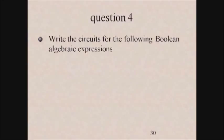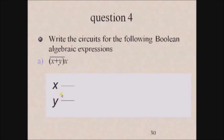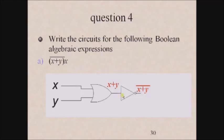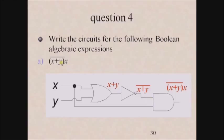For the expression (x plus y) whole complement · x: take input variables x and y. First, use an OR gate to get x plus y. Then give x plus y as input to a NOT gate to get x plus y whole complement. Finally, give x plus y whole complement and x as inputs to an AND gate to get the output (x plus y) whole complement · x.